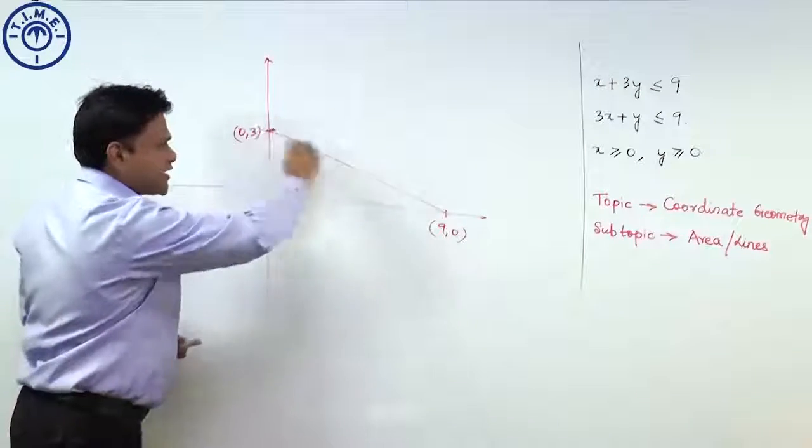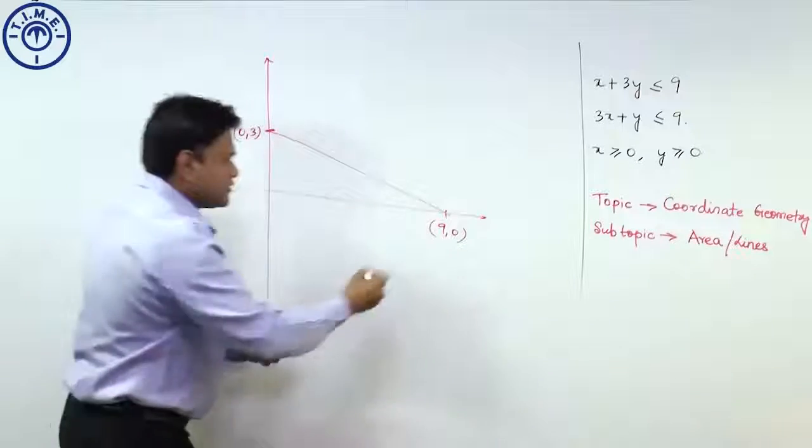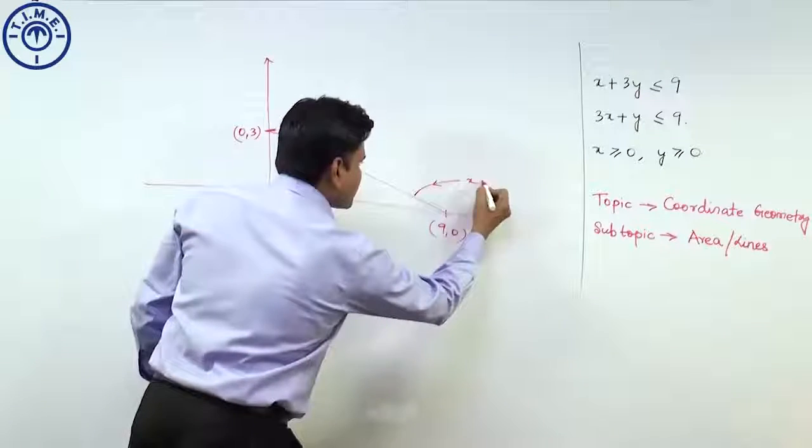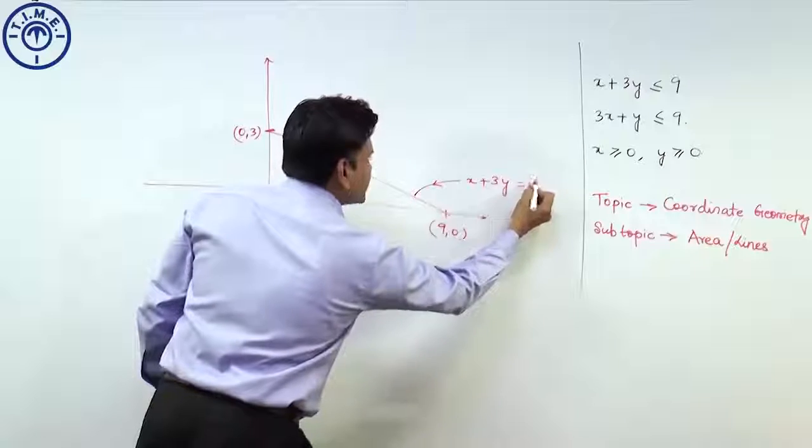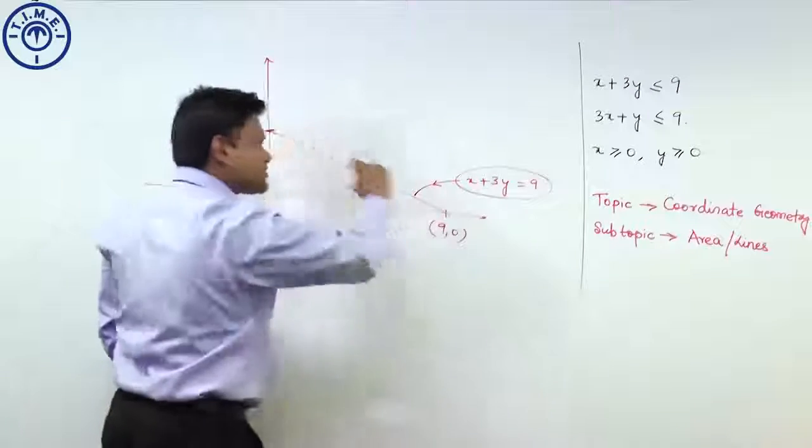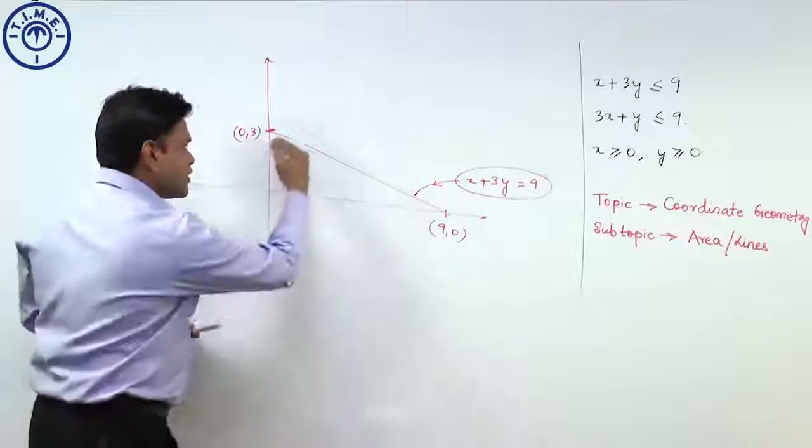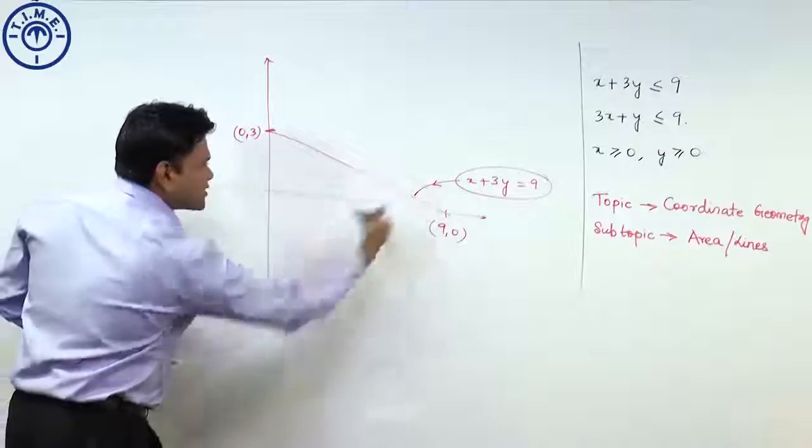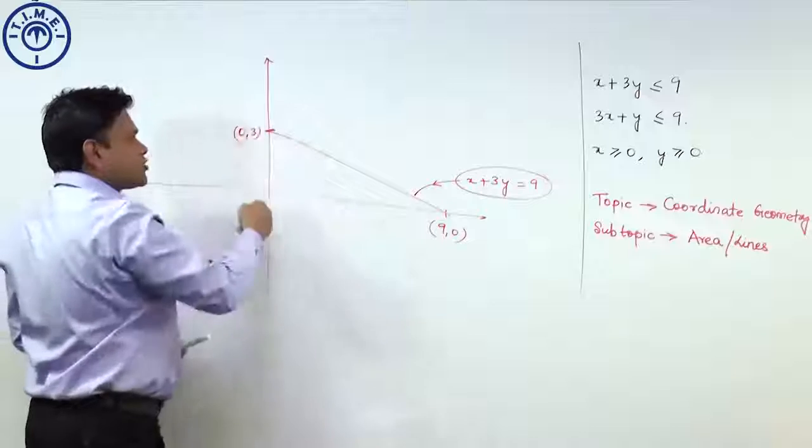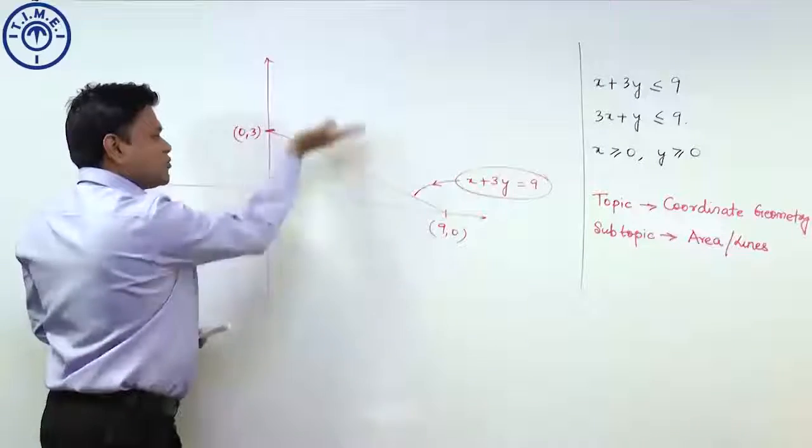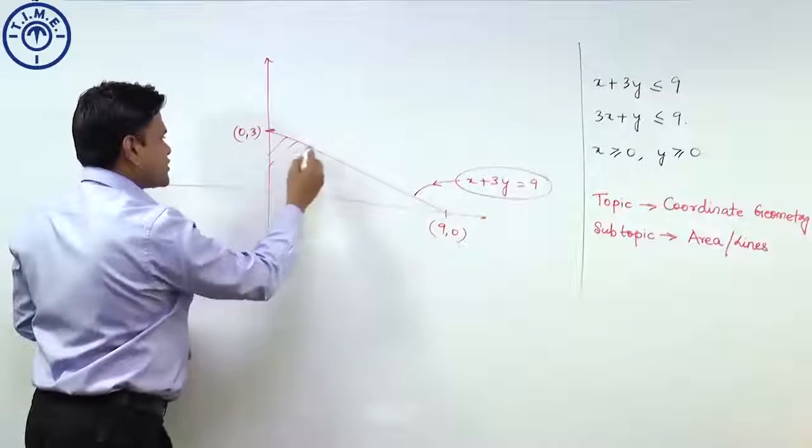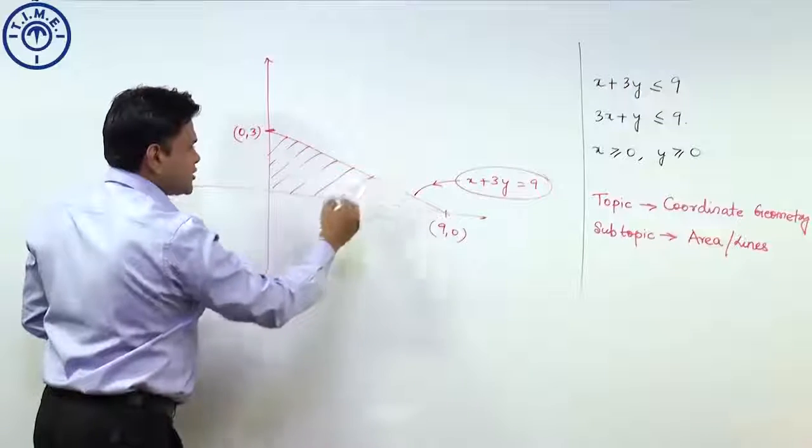That is what x plus 3y less than or equal to 9 is. The equation x plus 3y equal to 9 is the equation of this line. But when it says x plus 3y is less than or equal to 9, we are dealing with this entire area, this particular area. But this is already, it should be more than this part. So essentially we are dealing with this point, this entire shaded region.